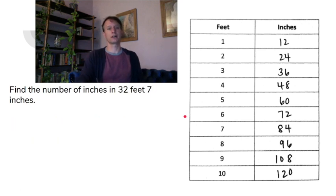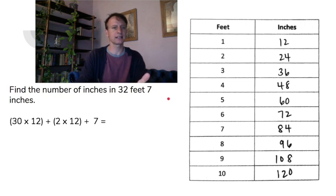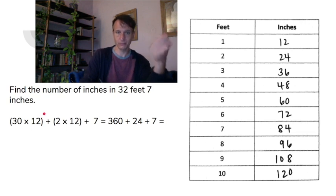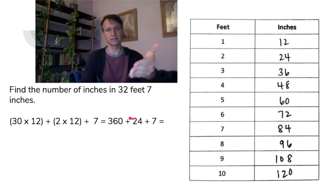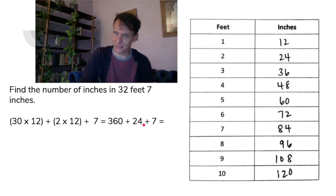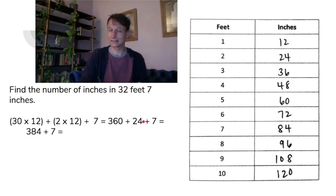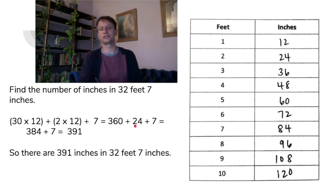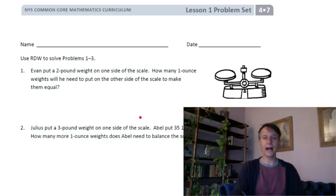Here's another one: thirty-two feet seven inches. Decompose it — thirty times twelve, plus two times twelve, then add the seven inches. Thirty times twelve: three times twelve is thirty-six, times ten is three hundred sixty. Two times twelve is twenty-four. Three hundred sixty plus twenty-four is three hundred eighty-four, plus seven more is three hundred ninety-one. So there are three hundred ninety-one inches in thirty-two feet seven inches.